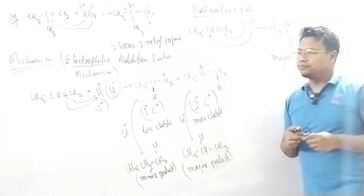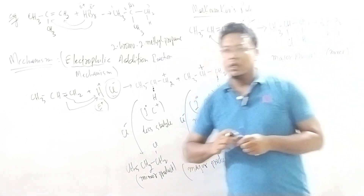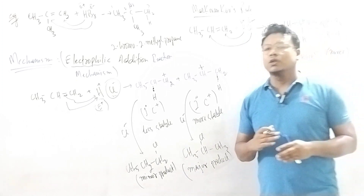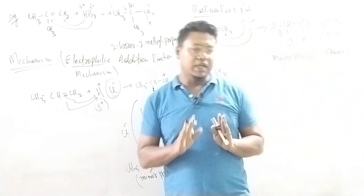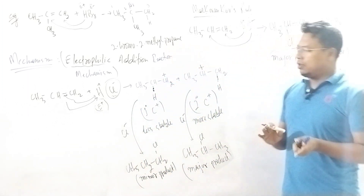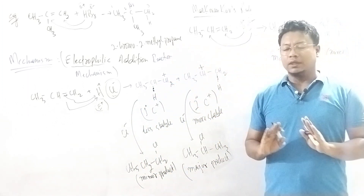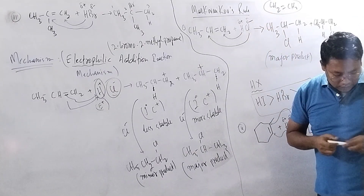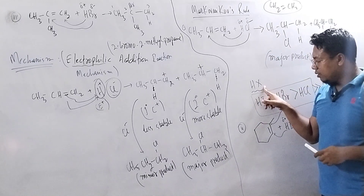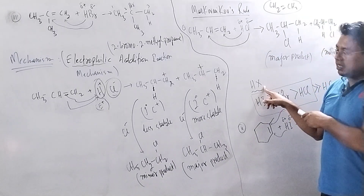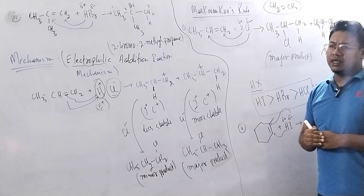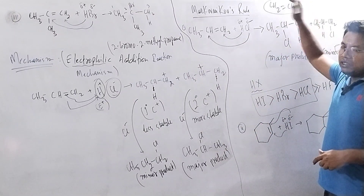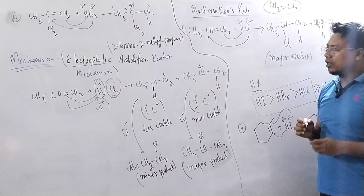So first of all, what is Markovnikov's rule? Markovnikov's rule is for the addition of hydrogen halide, especially to those alkenes which are not symmetrical in nature. We add hydrogen halide to unsymmetrical alkenes. If the alkene is symmetrical, for example ethene, then Markovnikov's rule is not applied.